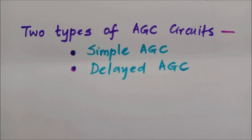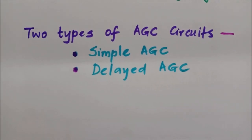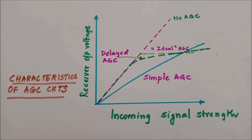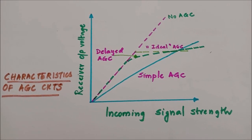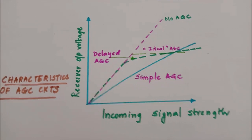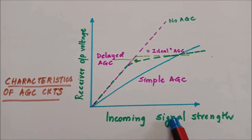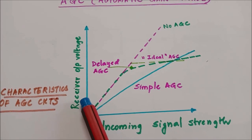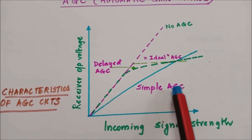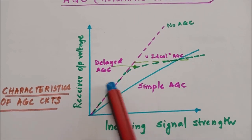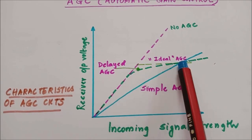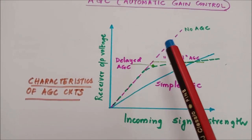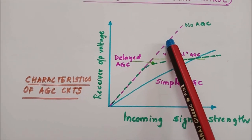There are basically two types of AGC circuits: simple AGC and delayed AGC. The figure shown here illustrates the characteristics of AGC circuits. On the x-axis we have the incoming signal strength and on the y-axis we have the receiver output voltage. The characteristics of a simple AGC circuit, a delayed AGC, and an ideal AGC are shown. The dotted line shows the case of no AGC at all — a receiver circuit which does not have an AGC mechanism.